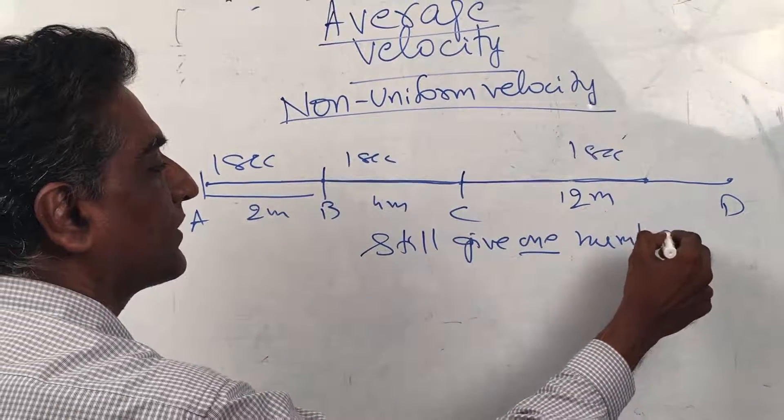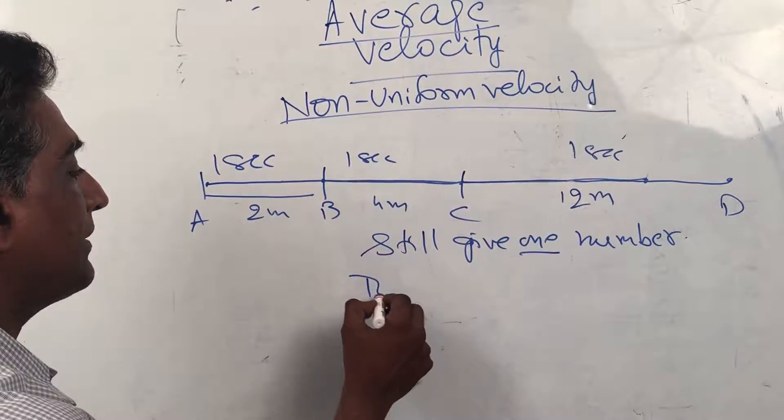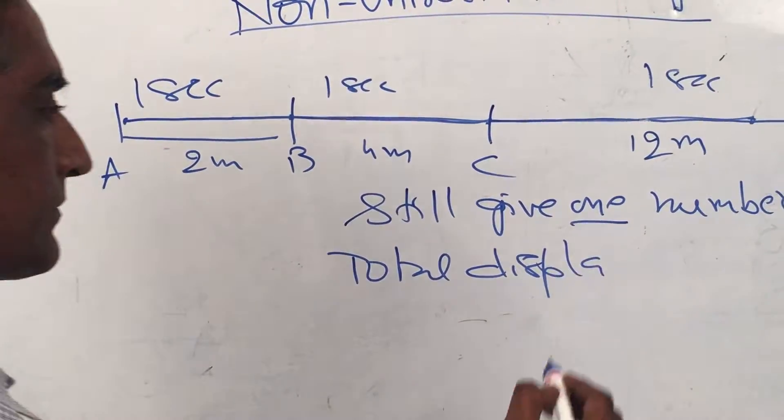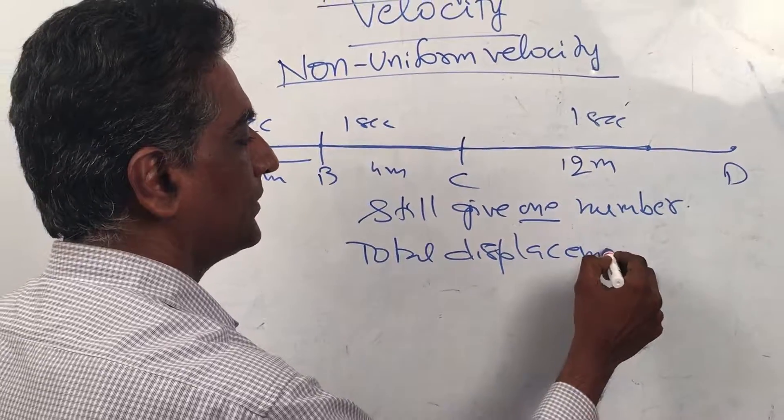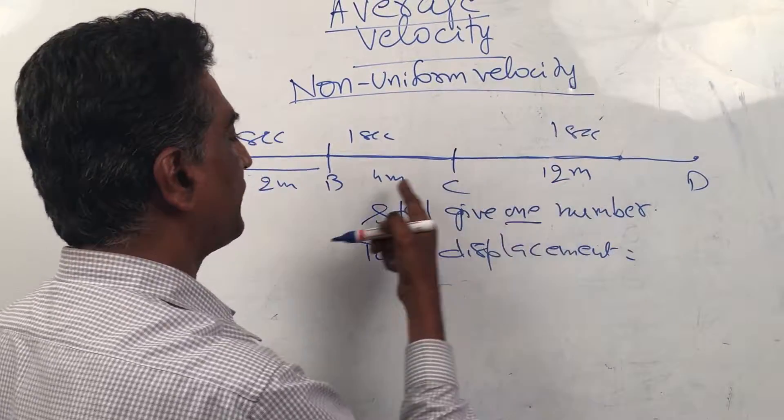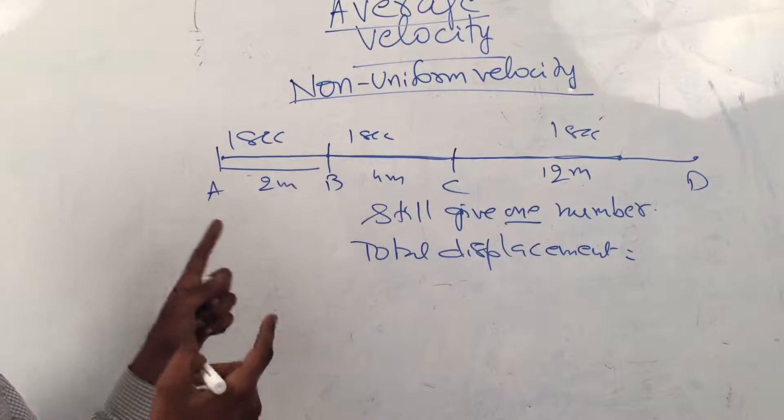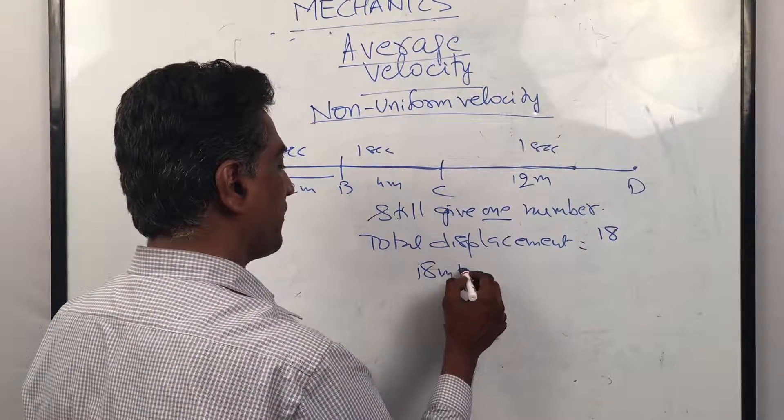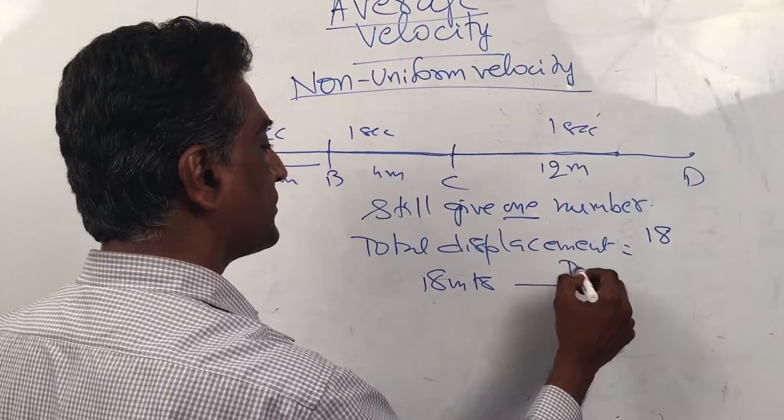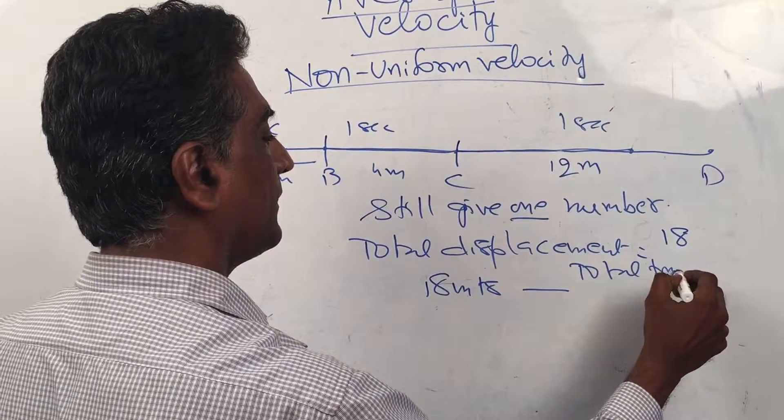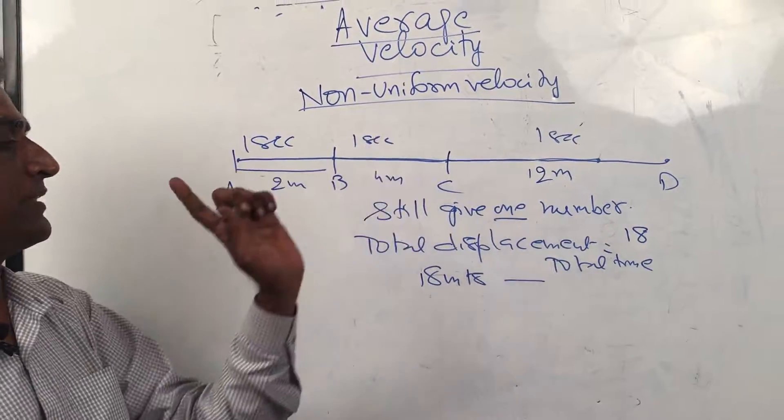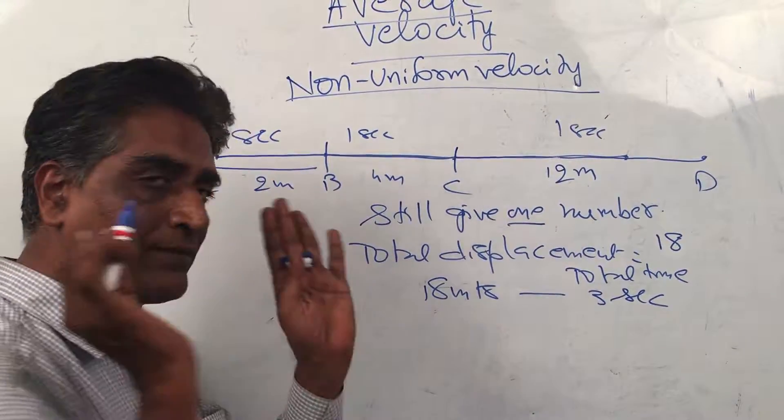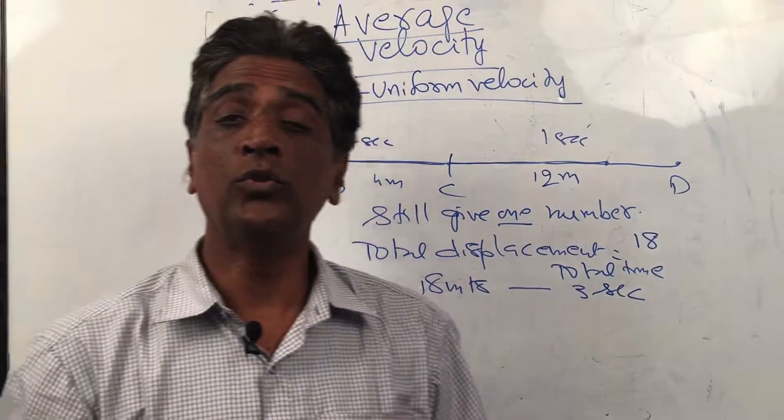So the total displacement is 12 plus 4 is 16, 16 plus 2 is 18, so 18 meters it went. What was the total time? Total time is 1, 1, 1—3 seconds. So in 3 seconds it went 18 meters.